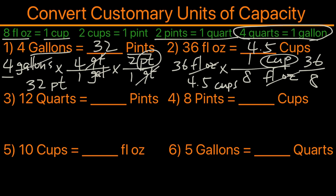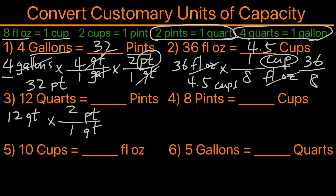For the third example we're converting quarts to pints. One quart equals two pints, so we take 12 quarts and convert to pints. Since one quart equals two pints, we cross out the quarts — 12 times 2 is 24, so we have 24 pints.